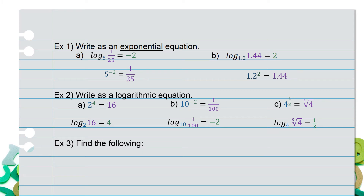Example 3: find the following. For part a, we have log base 27 of 3. We are being asked to find the exponent. What this really means is 27 raised to some power equals 3. Well, 27 is 3 cubed, but that means 3 is the cubed root of 27. Cubed root means a radical, which means the exponent would be a fraction — it would be 1/3.